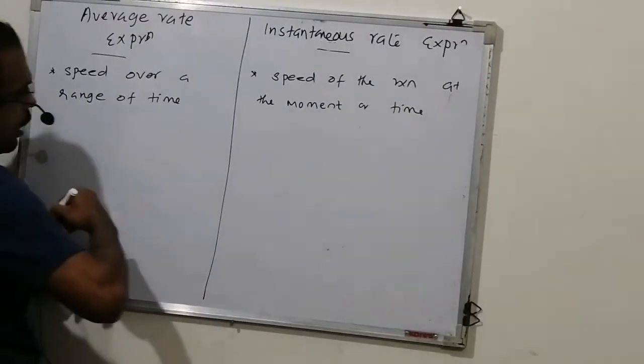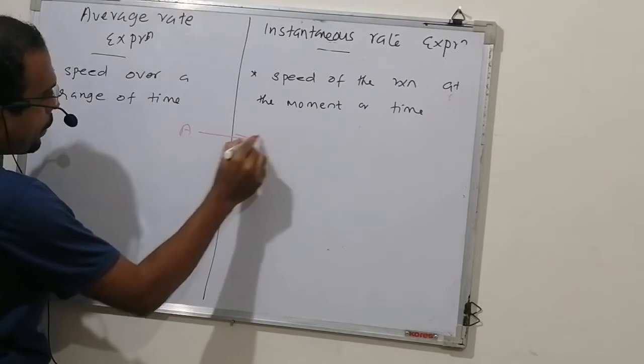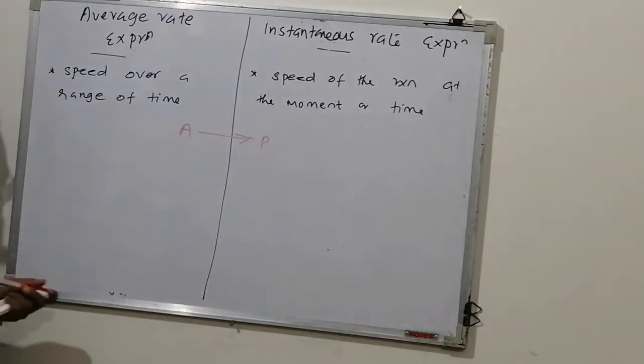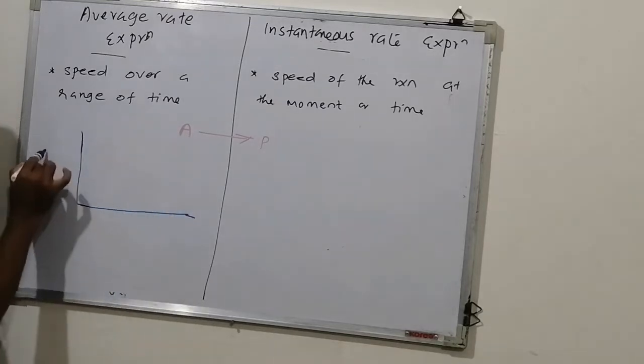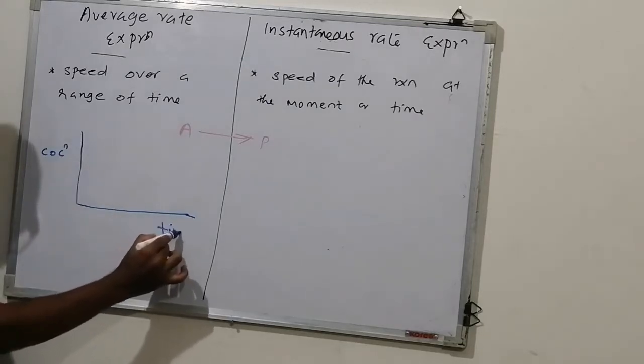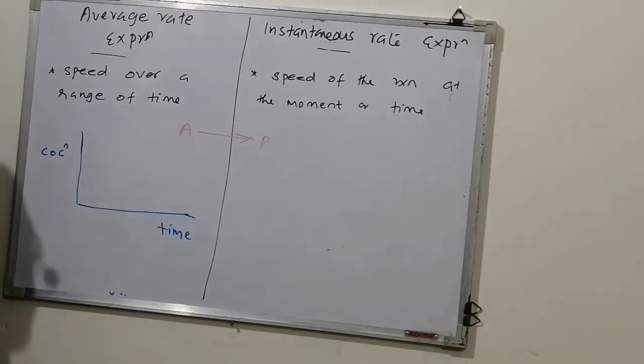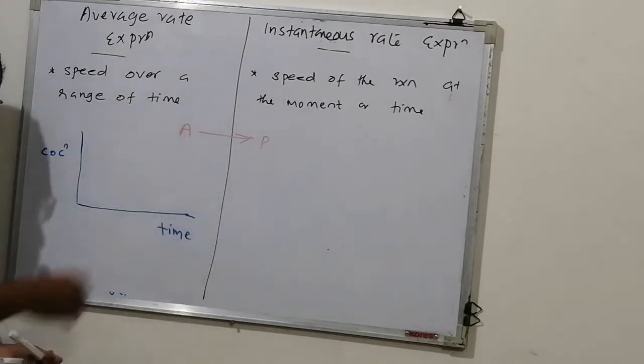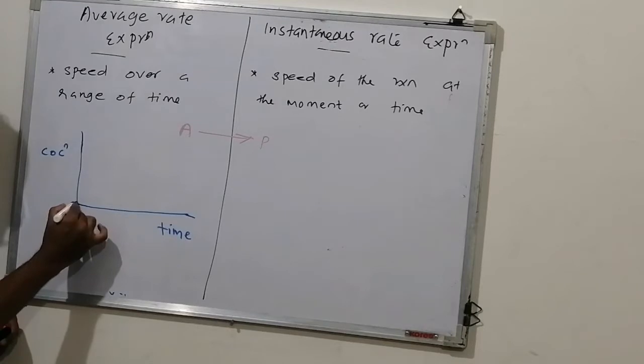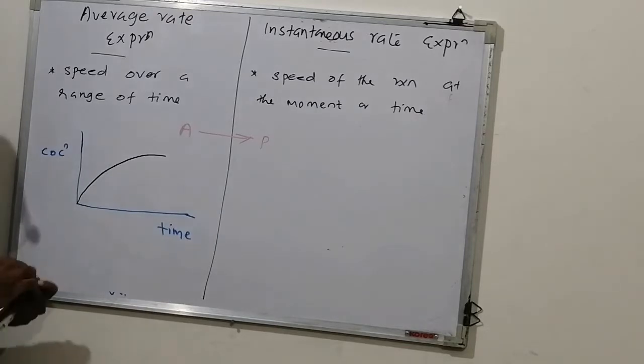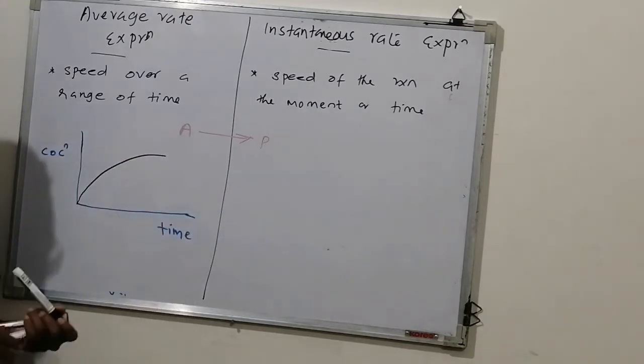Consider the reaction A gives P. This is your reaction. Now, you draw a graph of concentration and time. You can draw the variation of concentration of reactants or products. Conveniently I take the products. Initially, that is before the reaction starts, product concentration is zero. It slowly increases. Why is it flattened here? You learn. Because from here onwards, reaction has achieved equilibrium.